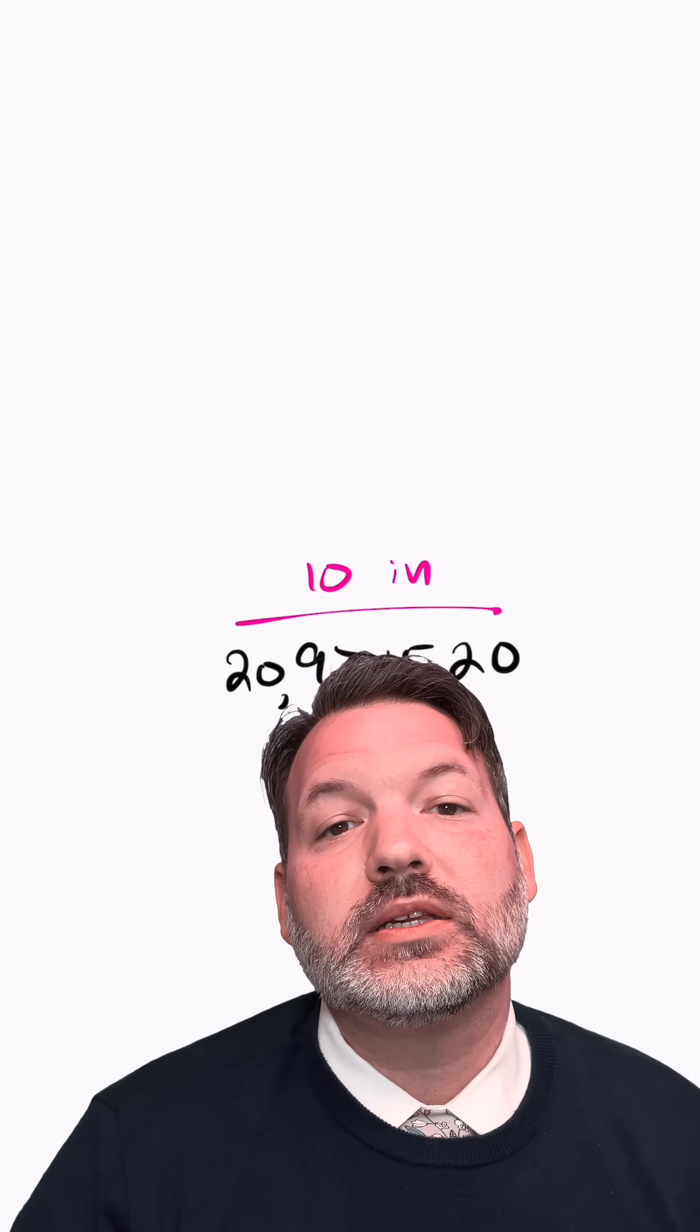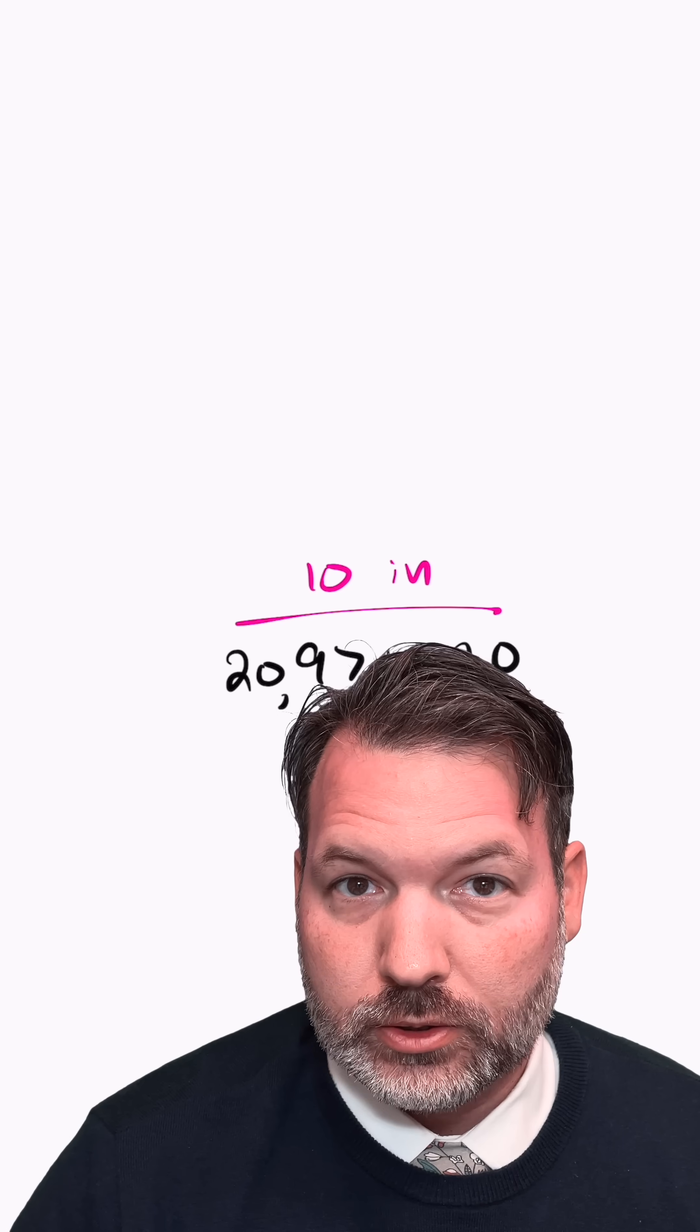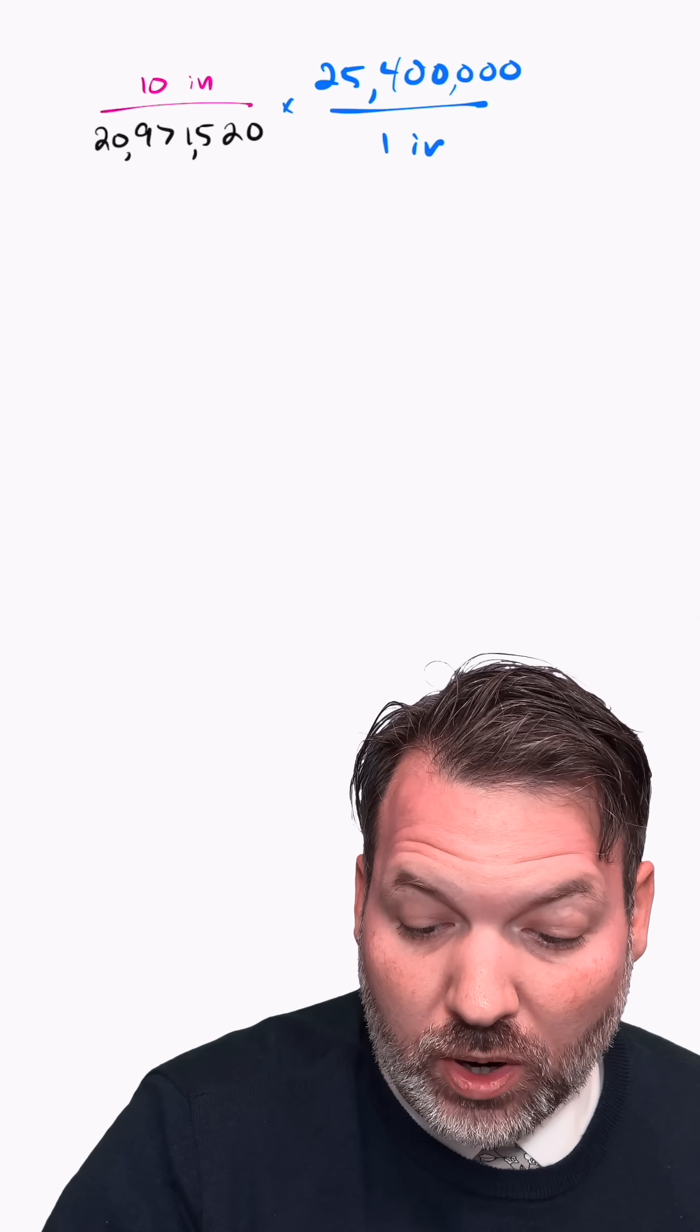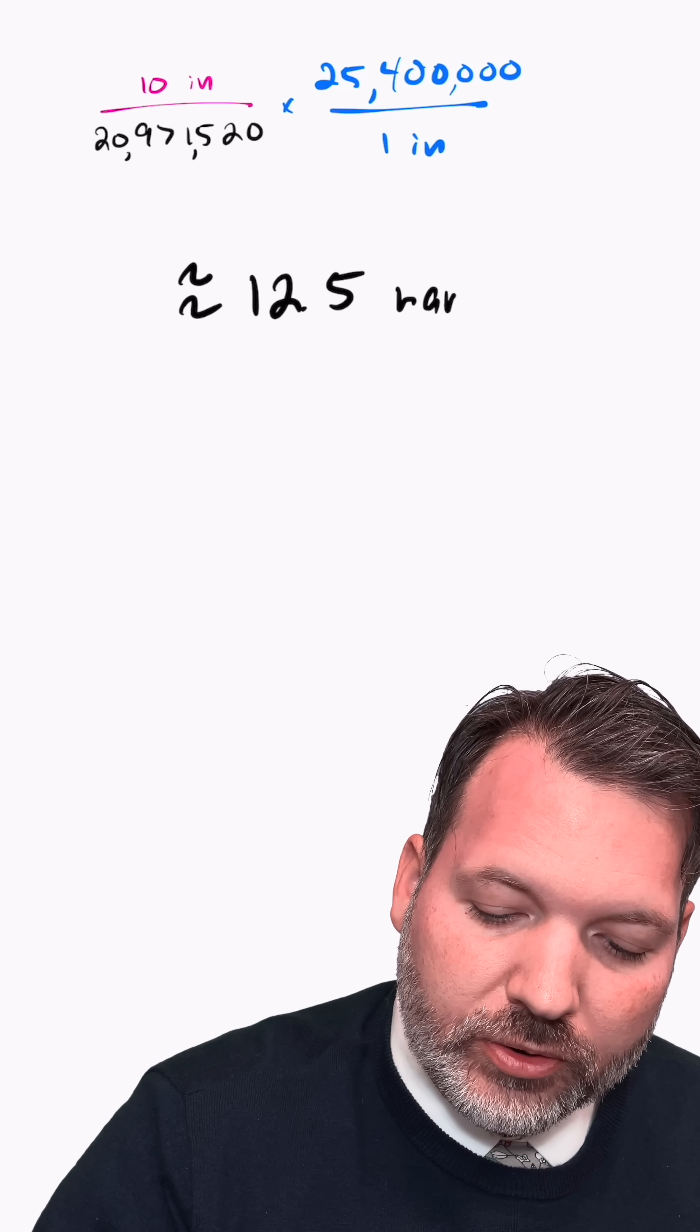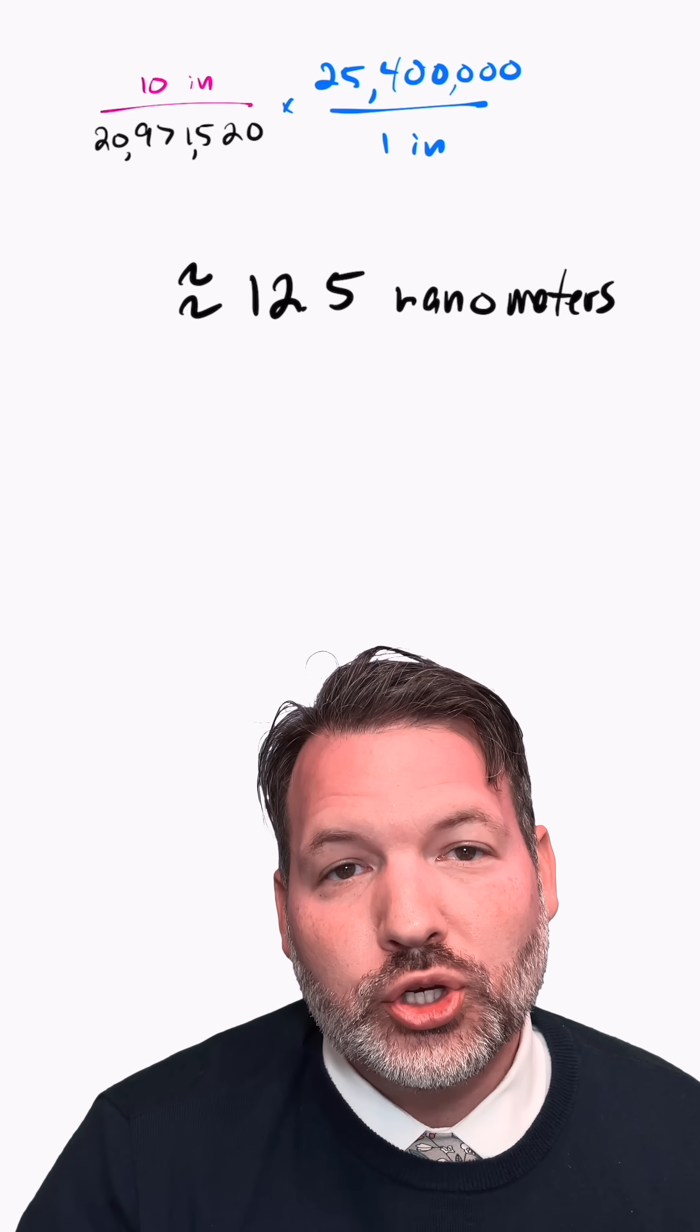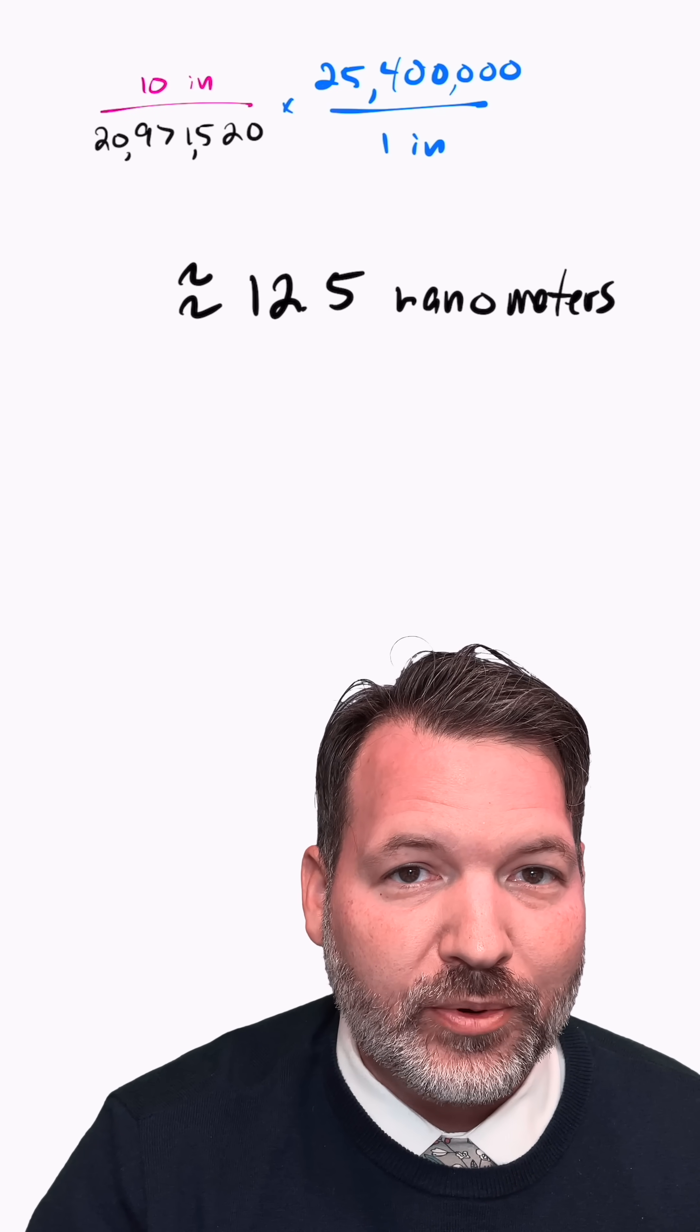Ten inches over this number is obviously really, really small. And so it might be worth converting this into something like meters or even better, a very small measure of meters: centimeters, millimeters, nanometers. There are 25,400,000 nanometers to an inch roughly. And as we multiply this out, we get something very close to 12 and a half nanometers per layer. For comparison, a strand of DNA is about two and a half nanometers thick. So we're talking about layers that are like five strands of DNA stacked on top of each other.